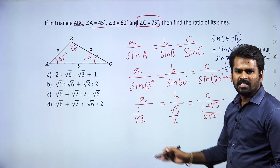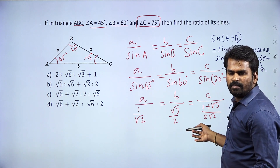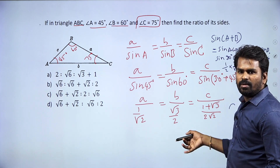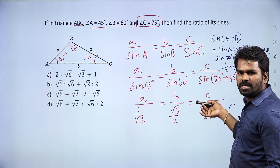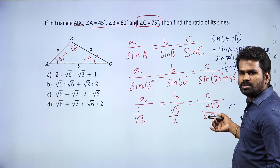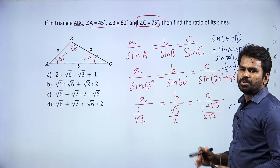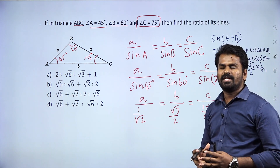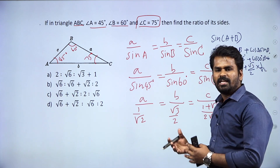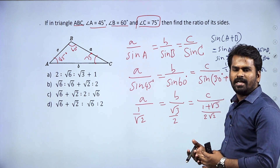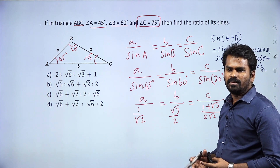So the ratio a : b : c equals 1/√2 : √3/2 : (1 + √3)/(2√2). These are the three values to be equated.